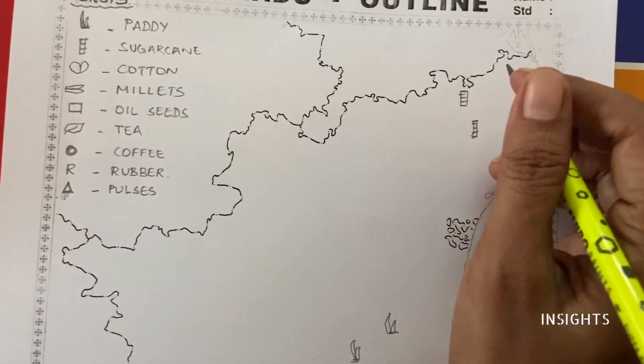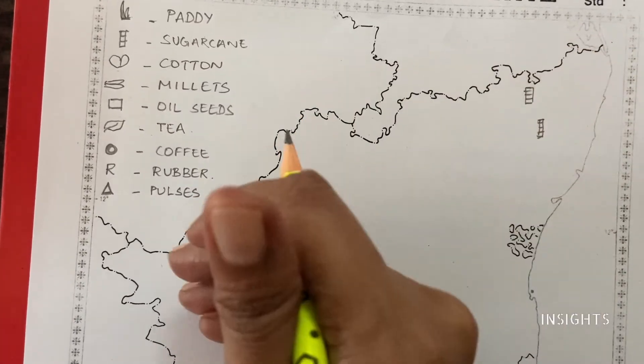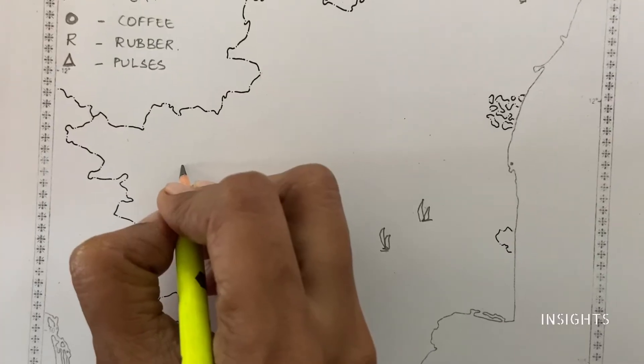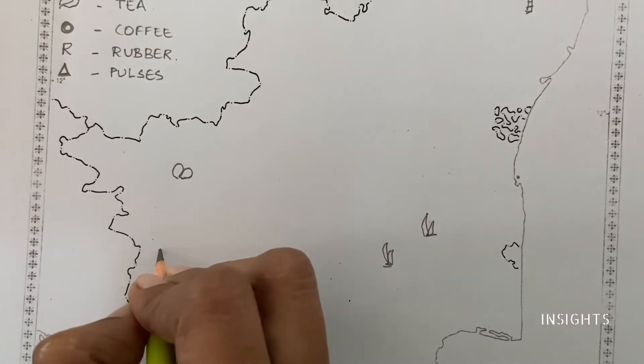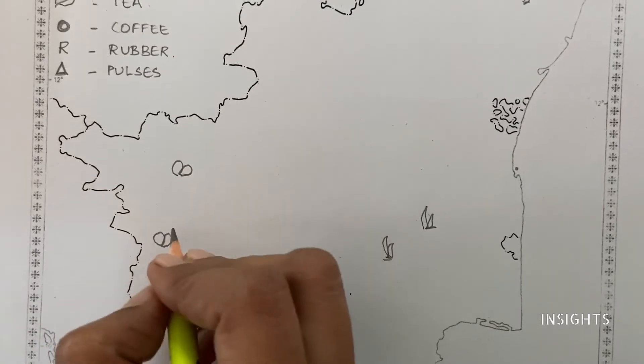What is next? Next is cotton. Cotton is grown in Coimbatore. Coimbatore is called the Manchester of Tamil Nadu. Okay, cotton growing areas.